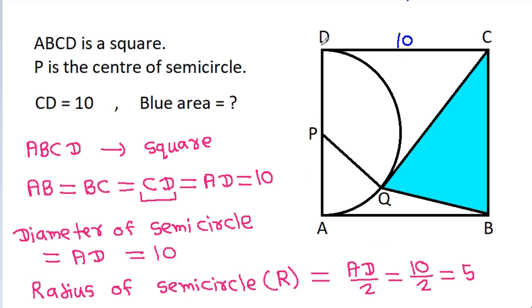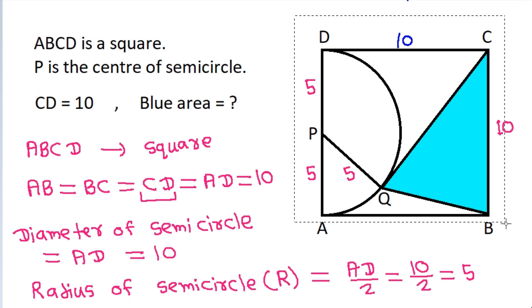So DP = 5, AP = 5, and PQ = 5. Also, BC = 10.